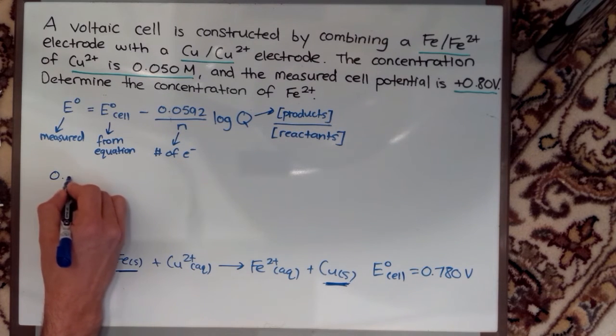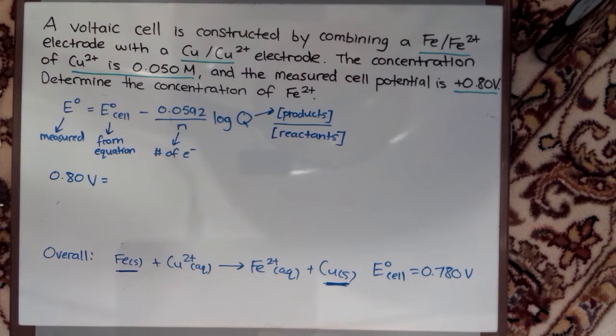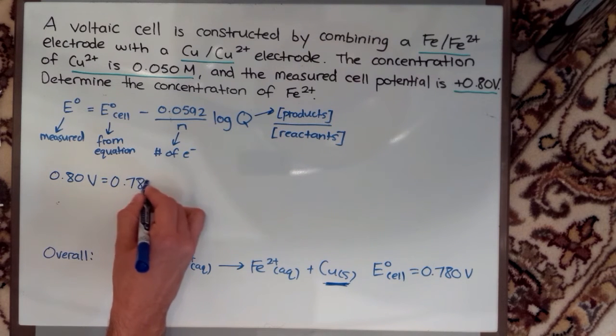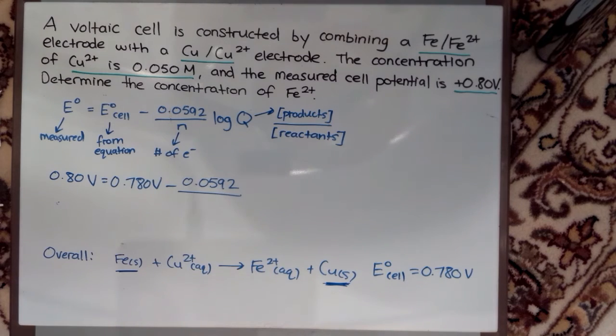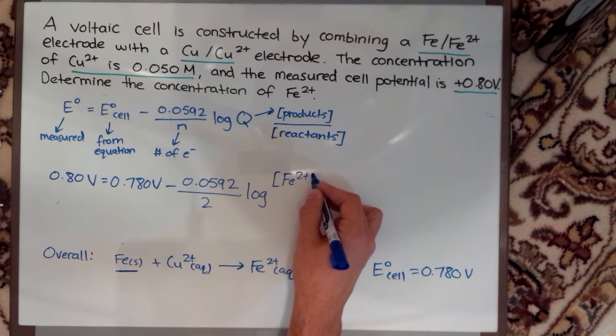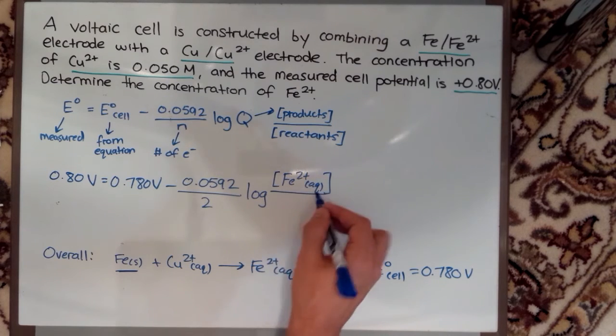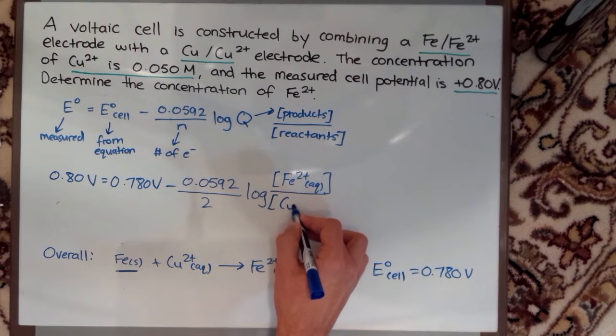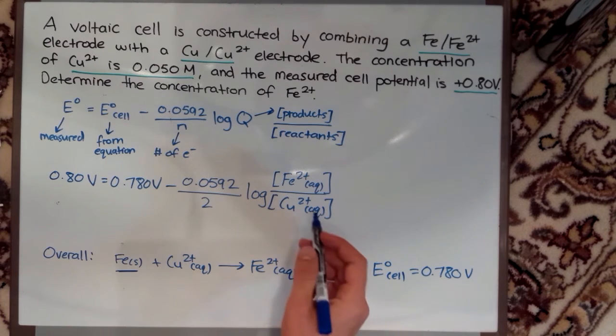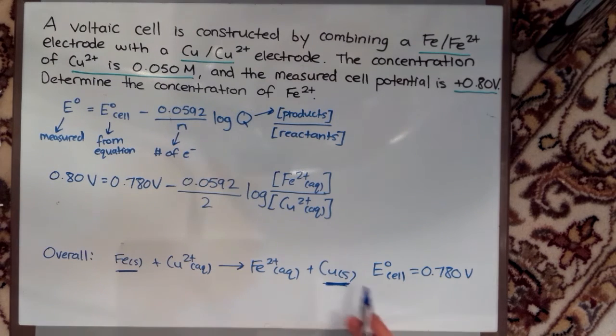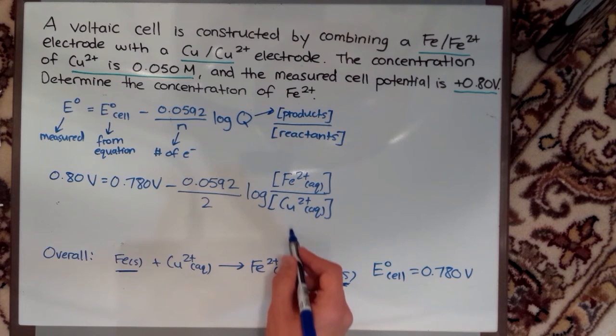Our measured cell potential is 0.80 volts. We calculated the standard cell potential, and my number of electrons was two. Now I can fill out my concentration of my product. Here I only consider the Fe2+, and my reactants is just Cu2+. I'm given my concentration of my Cu2+ which was 0.050 mole per liter.